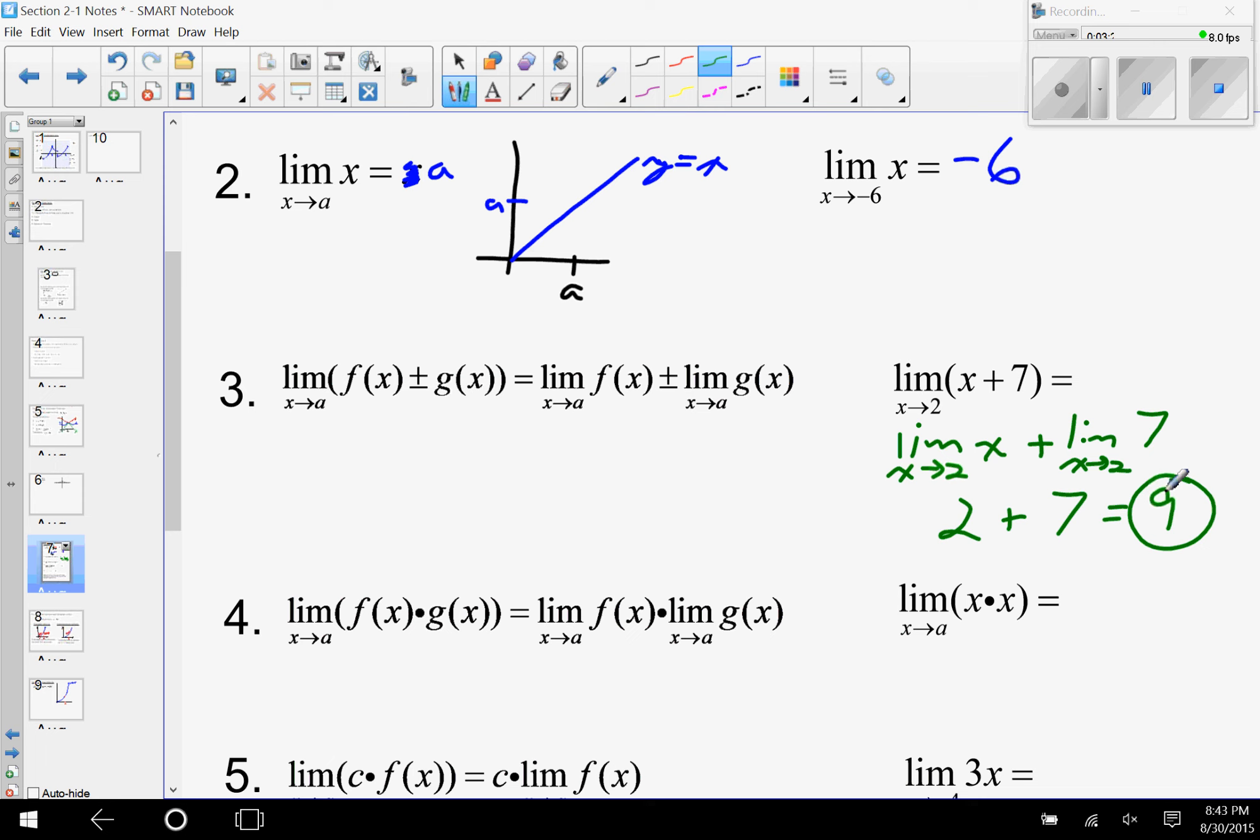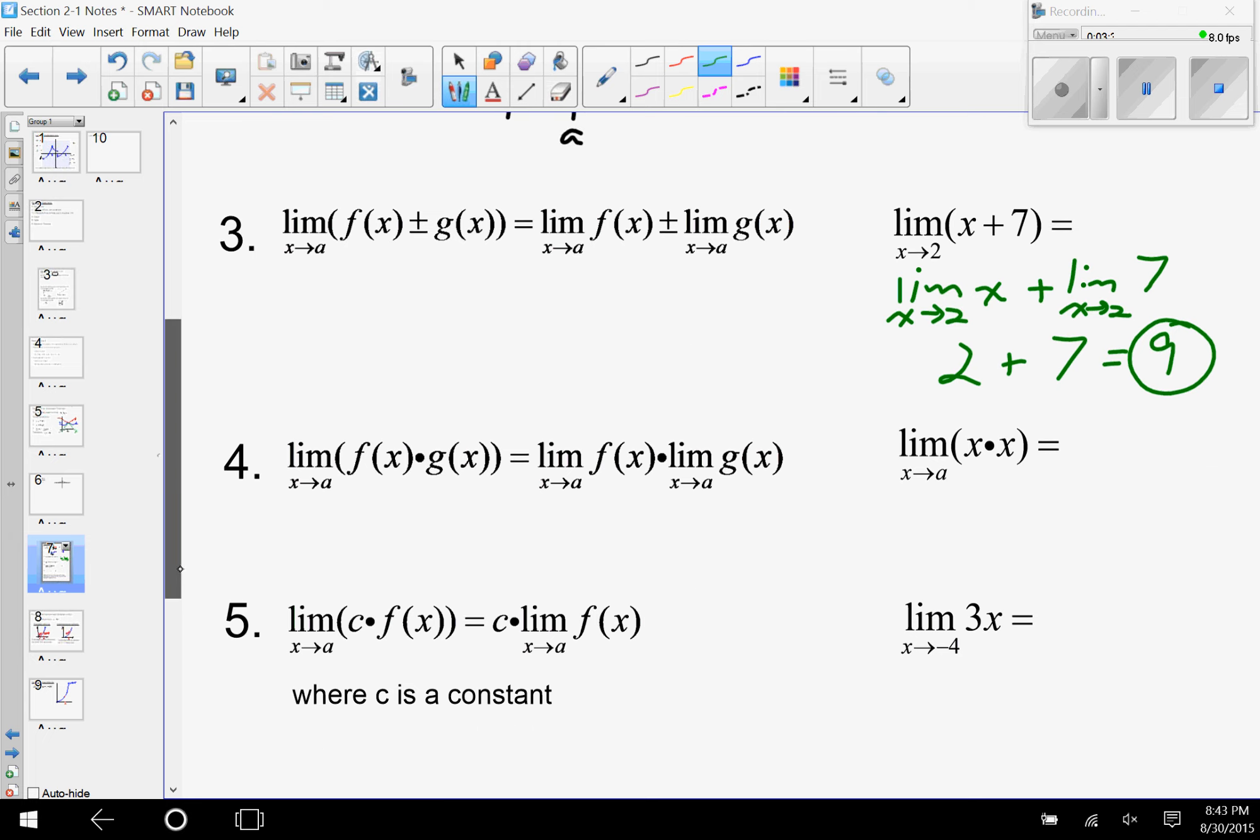Quite honestly, this is not one where I would typically use this property—this is one that we kind of do without actually thinking that we're doing it, because I could have just plugged 2 in for x here. But the sum and difference property is what allows us to do that.